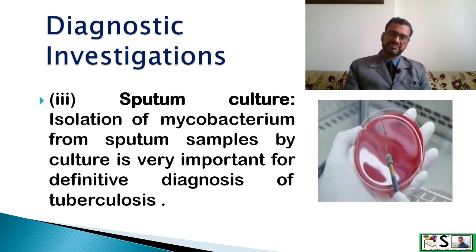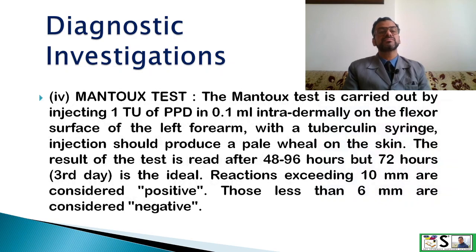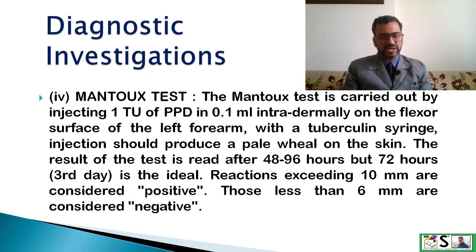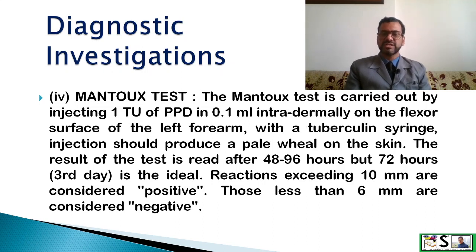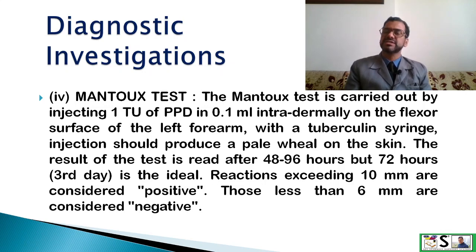Sputum culture — isolation of mycobacterium from the sputum sample by culture — is very important for definitive diagnosis of tuberculosis. The Mantoux test is carried out by injecting one tuberculin unit of PPD 0.1 ml intradermally on the flexor surface of the left forearm with a tuberculin syringe. The injection should produce a pale wheal on the skin. The result is read after 48 to 96 hours, but normally 72 hours is ideal. Reactions exceeding 10 mm are considered positive and those less than 6 mm are considered negative.